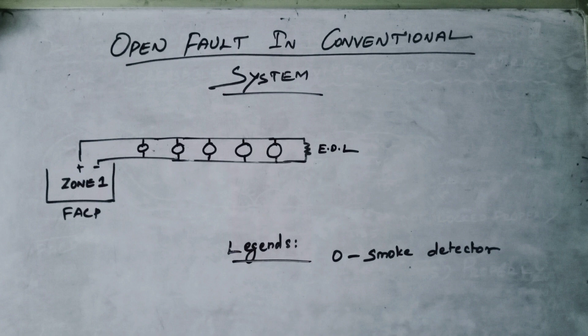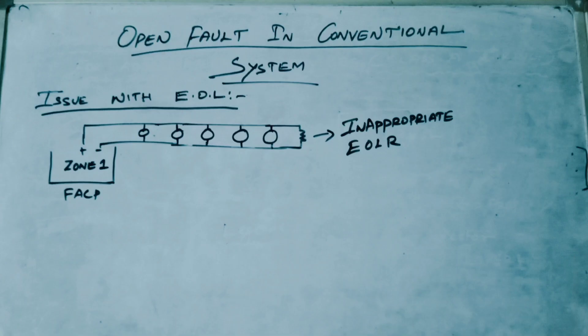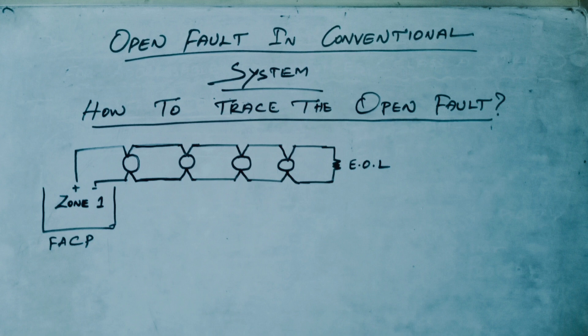I am now figuring out the open trouble in a conventional system. I'm using a typical conventional design with initiating devices like smoke detectors and pull stations. For panels that use a 4.7 kilo-ohm end-of-line resistor, check and make sure the end-of-line resistor is 4.7 kilo-ohms. You can find the end-of-line location by referencing the drawing. Doing this first makes troubleshooting much easier.